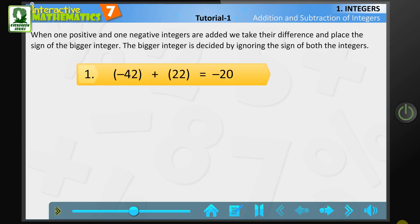For example, the sum of -42 and 22 is -20. The number 42 is greater than the number 22, so we put the sign of 42 in the result.